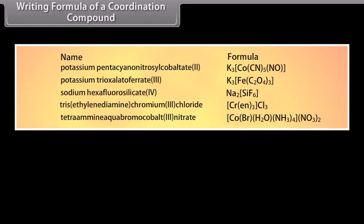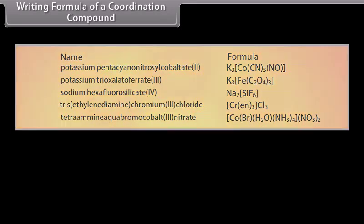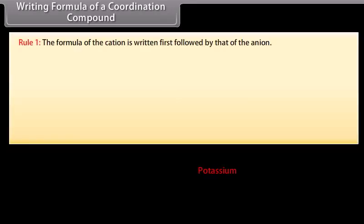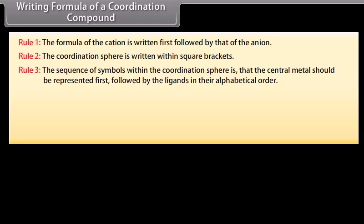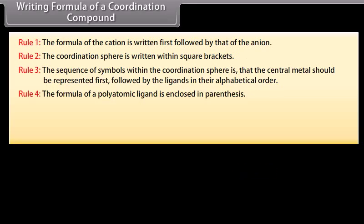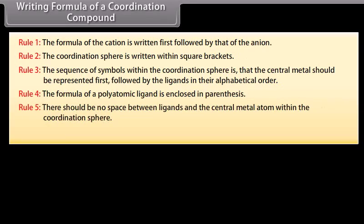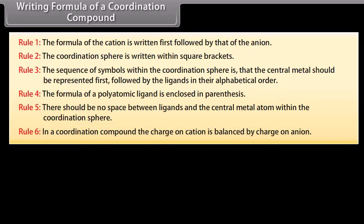Rules for writing the formula of a coordination compound when the name is given: Rule 1: The formula of the cation is written first followed by that of the anion. Rule 2: The coordination sphere is written within square brackets. Rule 3: The central metal is represented first, followed by the ligands in alphabetical order. Rule 4: The formula of a polyatomic ligand is enclosed in parentheses. Rule 5: There should be no space between ligands and the central metal atom within the coordination sphere. Rule 6: The charge on the cation is balanced by the charge on the anion.